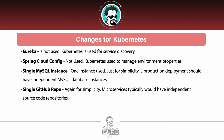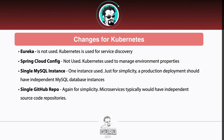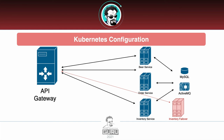Taking a look at our actual Kubernetes configuration: we will be using a gateway that exposes the different services — the Beer Service, Order Service, and Inventory Service. We will also be setting up the Inventory Failover. We will be using Kubernetes for service discovery, MySQL, and ActiveMQ for JMS. All of this will be deployed under Kubernetes, and in additional lessons we will be detailing each step to take these services into a Kubernetes environment.